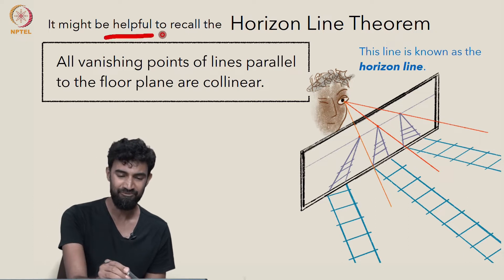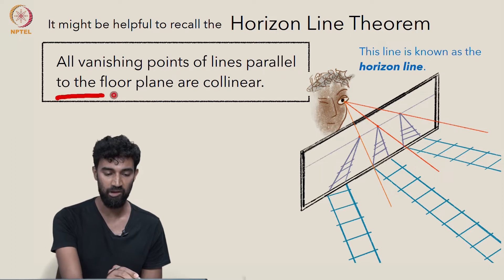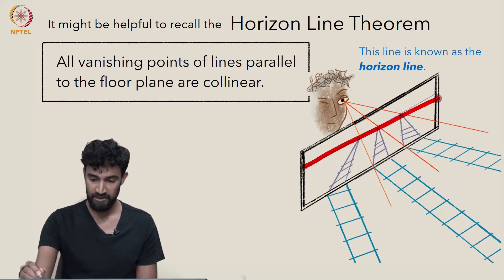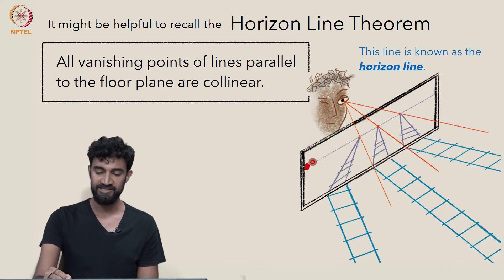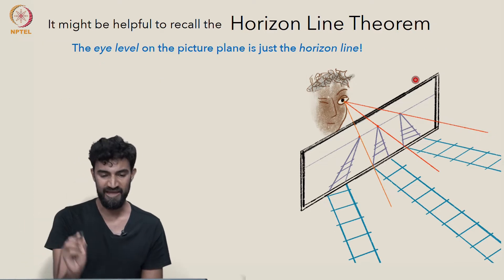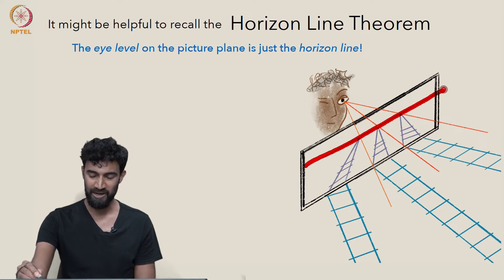So it might be helpful to recall the horizon line theorem, which stated that all vanishing points of all lines parallel to the floor plane are collinear. And the line they lie on on the picture plane is called the horizon line. And the eye level on the picture plane—well, that is just the horizon line.